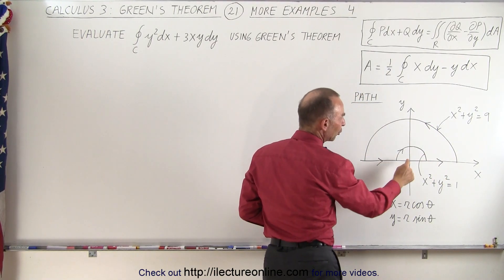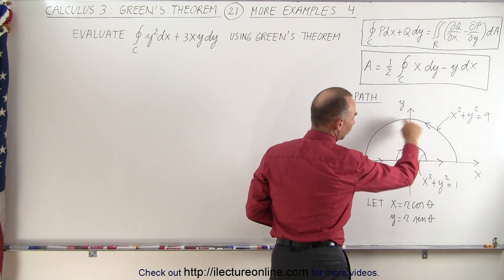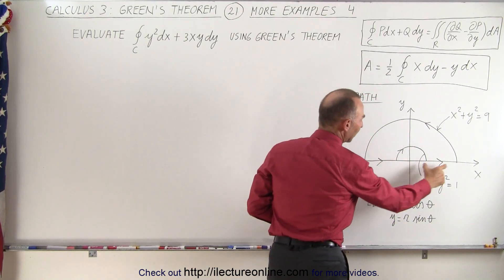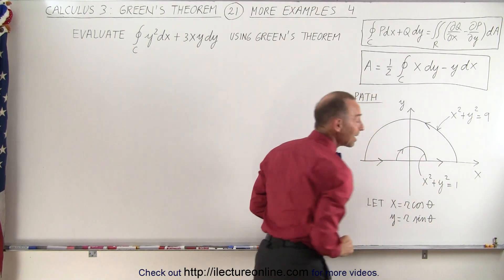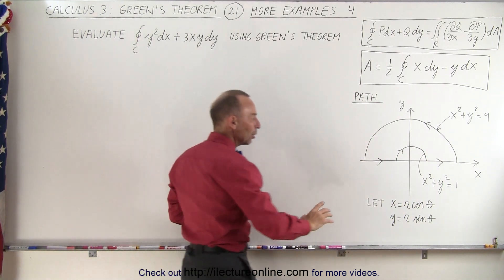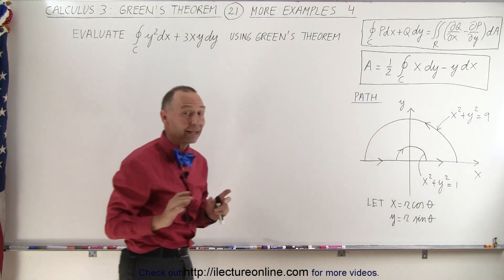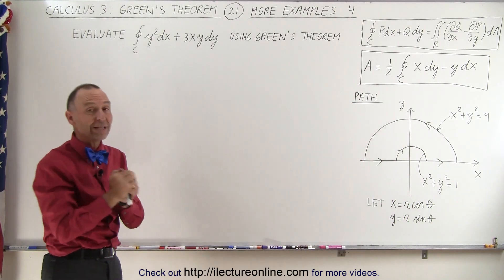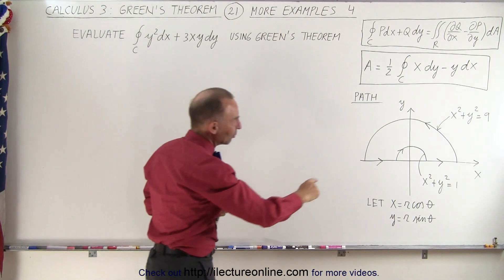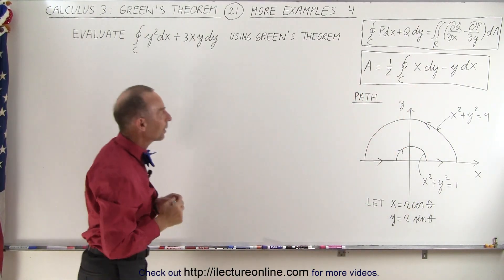Now we have two curves. We have this curve right here defined by x squared plus y squared equals 1, and this curve right here which is defined by x squared plus y squared equals 9. We also have these two sections right here. We are going to convert to a new parameter called theta, and we are going to use Green's Theorem, which means that instead of doing the straight line integral over all these line sections, we're going to apply that methodology right there.